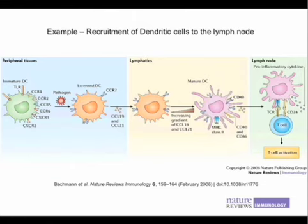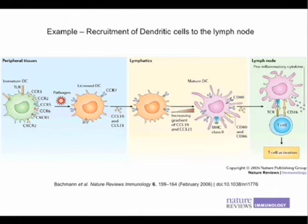Meanwhile, the dendritic cell keeps changing its phenotype. It upregulates class 2 molecules, processes and presents the peptides in the groove of its class 2 molecules, and also upregulates co-stimulatory molecules like CD40, CD80, and CD86. So now you have a cell that has taken up and processed the antigen and upregulated the required molecules to interact with the T cell. It then interacts with T cells in the lymph node.